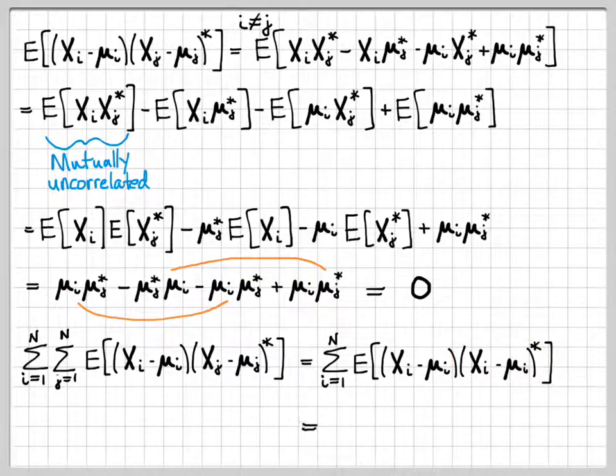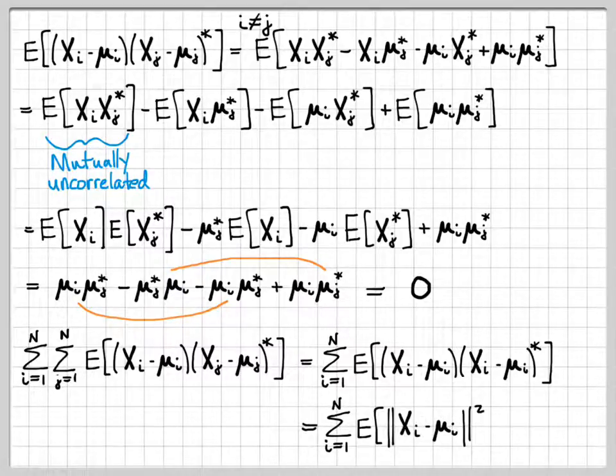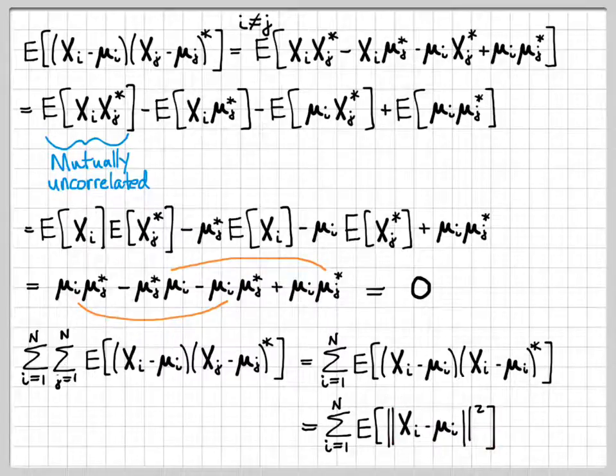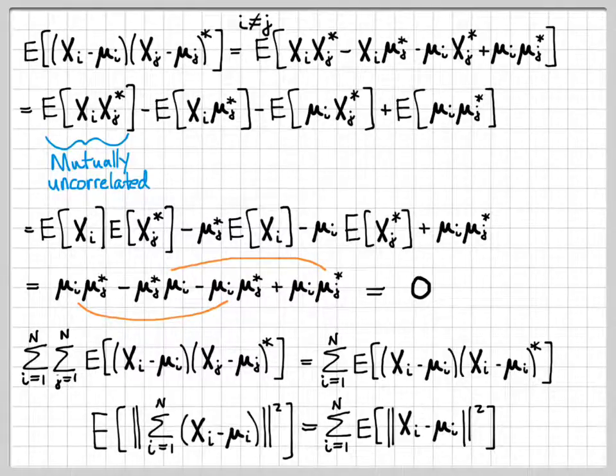Now we're almost there. This by definition, on the right here, is just the definition of norm squared again. If we have a quantity times its complex conjugate transpose, this vector quantity by definition, that means that quantity norm squared. So we can go back to using our norm squared definition.